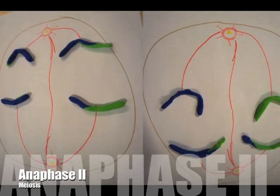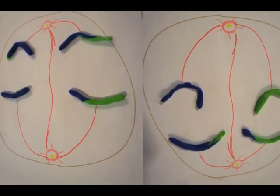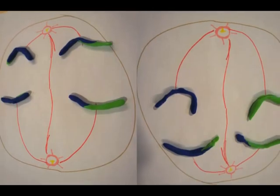Anaphase II is when the chromosomes split and are moved from the metaphase plate by kinetochores, separating sister chromatids.